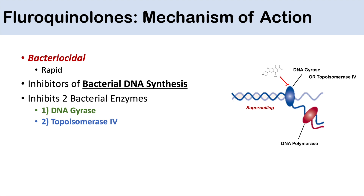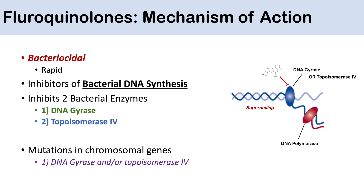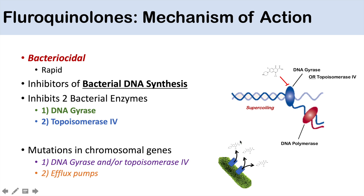Due to overuse of fluoroquinolones, antibiotic resistance has developed. Bacteria develop resistance through mutations in chromosomal genes for DNA gyrase and/or topoisomerase 4, preventing fluoroquinolones from binding and inhibiting them. Another mechanism is the development of efflux pumps — bacteria insert pumps into their membrane to pump out the antibiotics, so fluoroquinolones don't reach sufficient concentration within the bacteria to cause dysfunction or cell death.